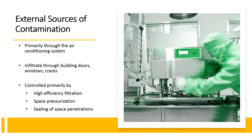The source of contamination is categorized as external sources and internal sources. For any given space, there exists the external influence of gross atmospheric contamination. External contamination is brought in primarily through the air conditioning system through makeup air. Also, external contamination can infiltrate through building doors, windows, cracks and wall penetrations for pipes, cables and ducts. The external contamination is controlled primarily by high efficiency filtration, space pressurization and sealing of space penetrations.